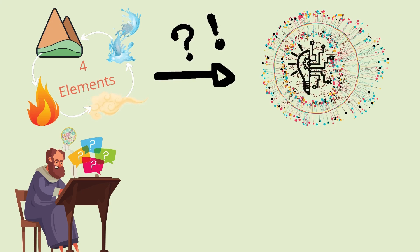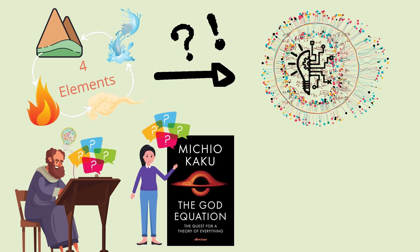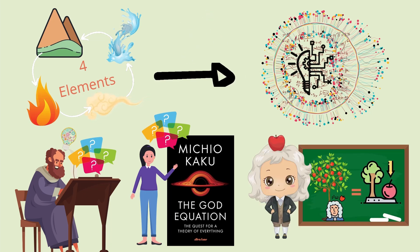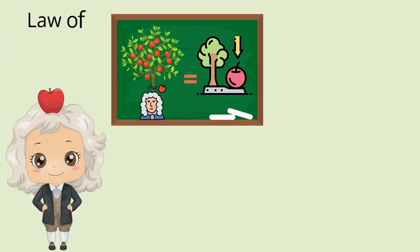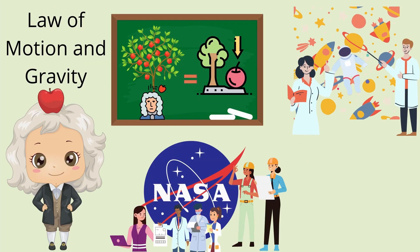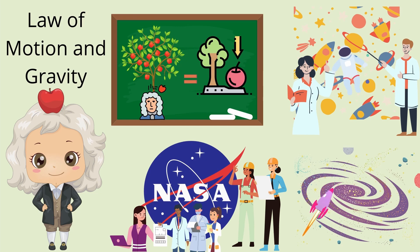Many such questions are asked in this book, The God Equation, the quest for a theory of everything. Dr. Michio Kaku says Newton's theory of motion and gravitation stands as one of humankind's most outstanding achievements. Even today, Newton's laws allow NASA engineers to guide our space probes across the solar system.